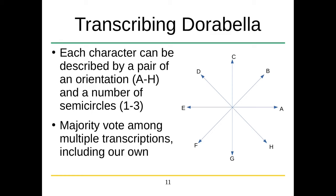So how are we going to treat the cipher as symbols? We still have to encode the Dorabella cipher. The symbols have one to three bumps and they're angled in eight different ways, giving us a way of encoding each direction along with the number of bumps or semicircles. We transcribed it multiple times — multiple people transcribed it — and then we used the majority vote on our transcriptions to figure out which one we should keep, because there was some disagreement about the angle and the number of bumps.